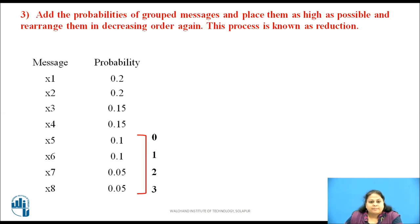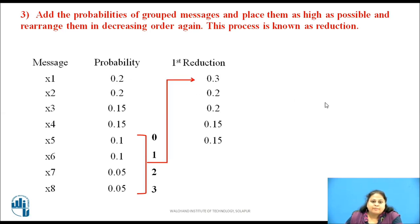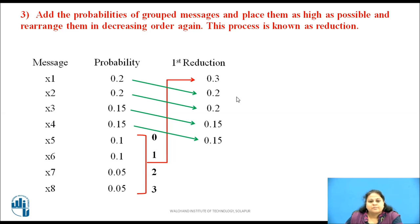The next step is to add the probabilities of these grouped terms and place the result as high as possible, then rearrange in decreasing order again. The group of these four terms comes to be 0.3, which is greater than the next higher probability of 0.2, so it is placed at the top position and all others are shifted further. These are the terms obtained after the first reduction.